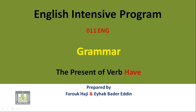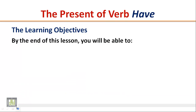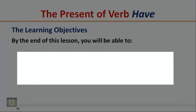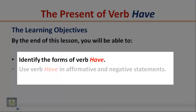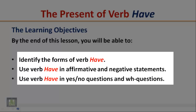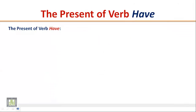English Intensive Program 011 — Grammar: The Present of Verb 'Have.' Learning objectives: by the end of this lesson, you will be able to identify the forms of verb 'have,' use verb 'have' in affirmative and negative statements, and use 'have' in yes/no questions and WH questions. Listen to the following short conversations and pay attention to the form of verb 'have.'